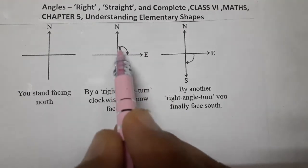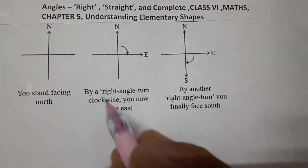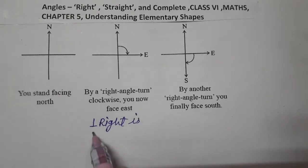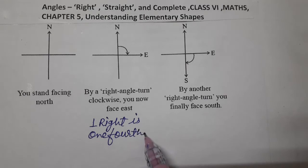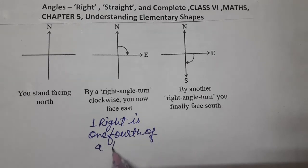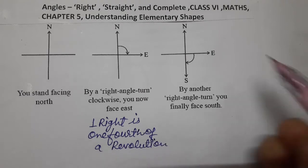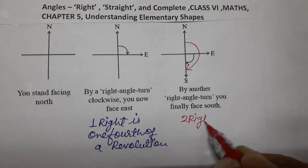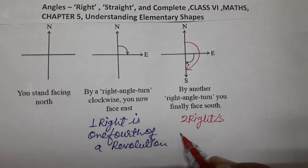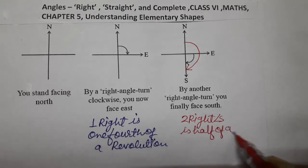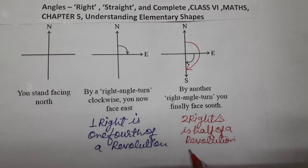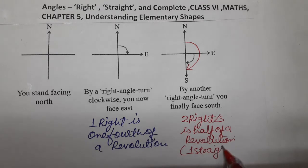So when we are moving from north to east, that is one right angle, then it is one-fourth of a revolution. One right angle is one-fourth of a revolution. And when we move from north to south, it is two right angles, and two right angles means half of a revolution. Two right angles is also called one straight angle.